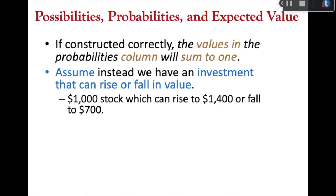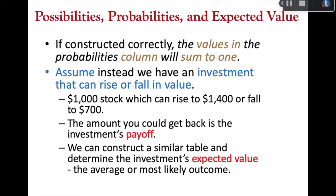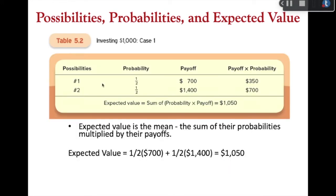Let's say instead of tossing a coin with heads or tails, I make an investment in a stock. There's a 50% chance the stock price rises or falls in a year from now. To simplify, we assume only two possibilities: the stock will either be $1,400 or $700 a year from now. What is the expected value? There's a 50% chance the price will be $1,400, so 0.5 × $1,400 = $700. There's a 50% chance the price will be $700, so 0.5 × $700 = $350.